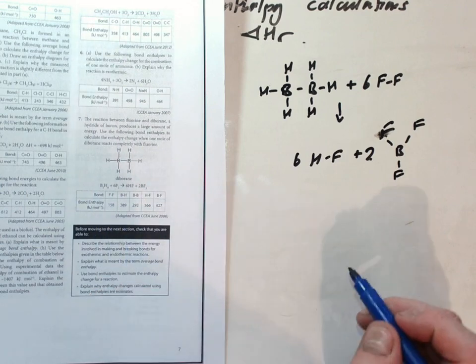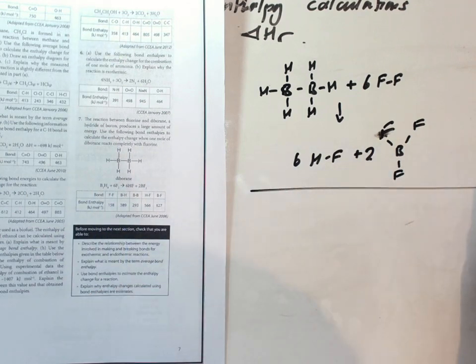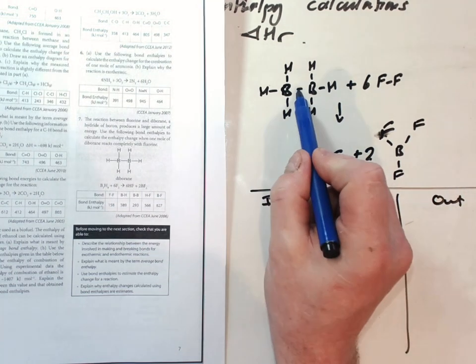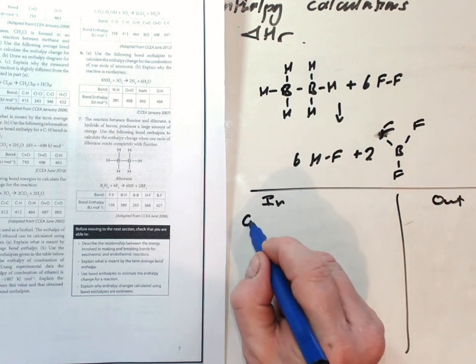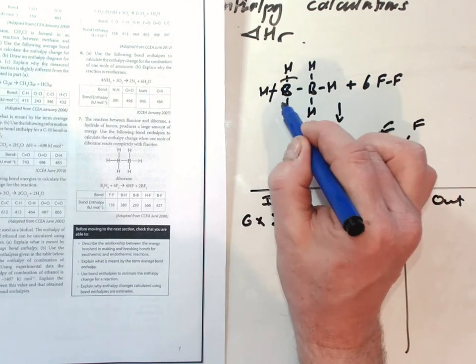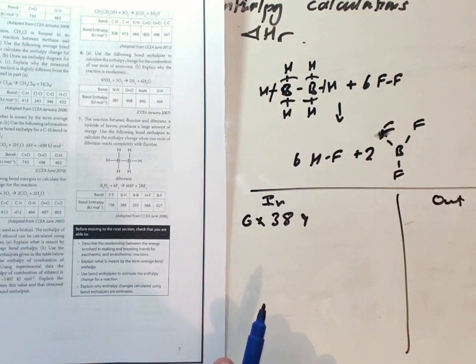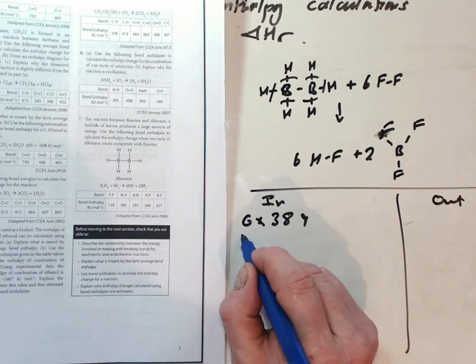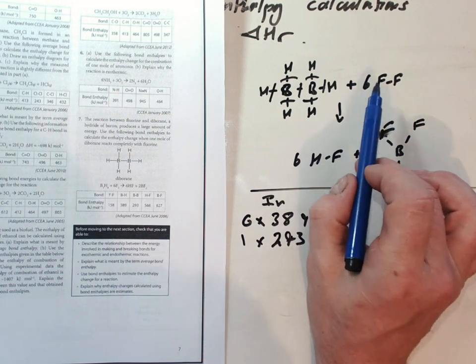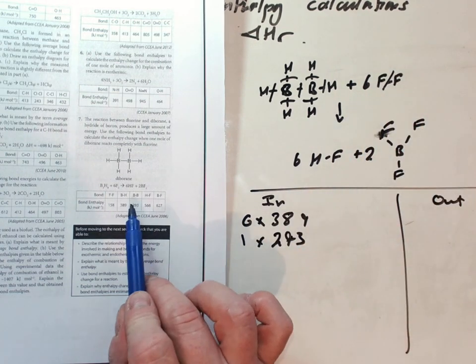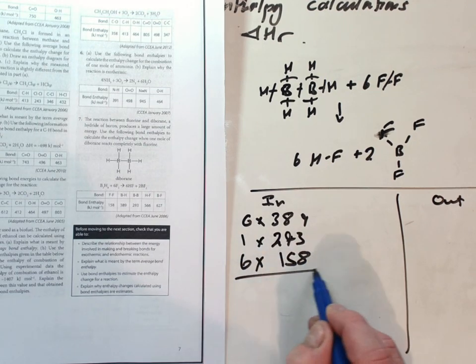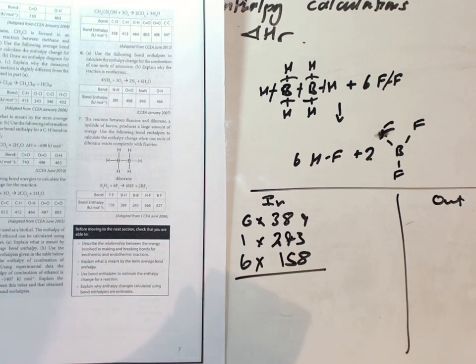We go over to our table. We'll make a list of energy going in and energy going out. Going in, we have six times the B-H bonds, so six times 389. I'll stick a line between all of those. Then we have a boron-boron bond, one of those there, one times 293. Then we have six F-F bonds there, so six times 158. That's our energy going in.